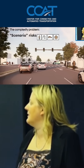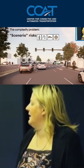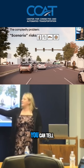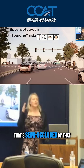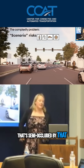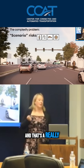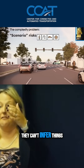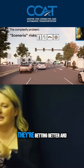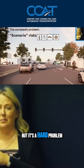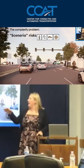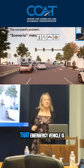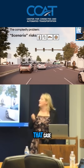Here's another scene. This one is a vehicle cutting off ego right here. And there's also a pedestrian in the crosswalk that's semi-occluded by that vehicle — and that's a really hard problem. Occlusions are really hard for self-driving cars because they can't infer things very well. They're getting better and better at it, but it's a hard problem — it's hard for us as humans too. And then there's an emergency vehicle, so understanding that the emergency vehicle is there and what you're supposed to do in that case.